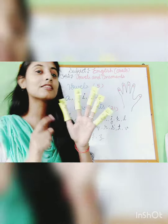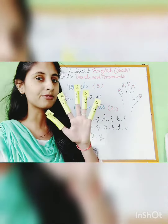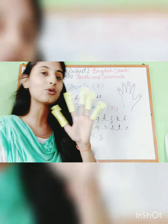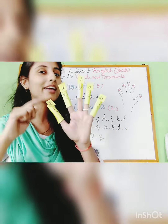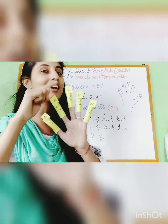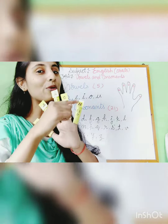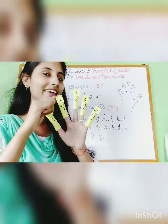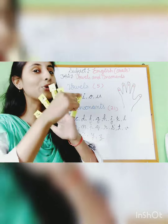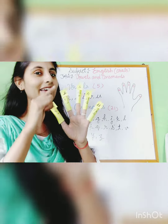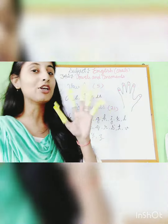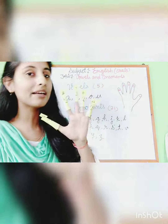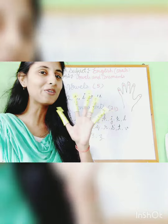Repeat. Vowels of the alphabet, I know them all by name. A, E, I, O, U. A, E, I, O, U. A, E, I, O, U. I know them all by name.